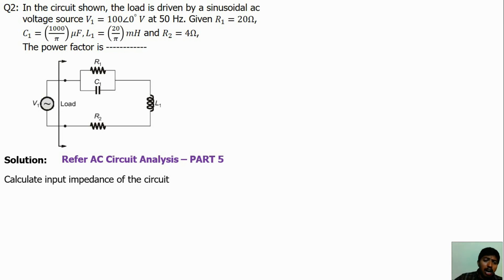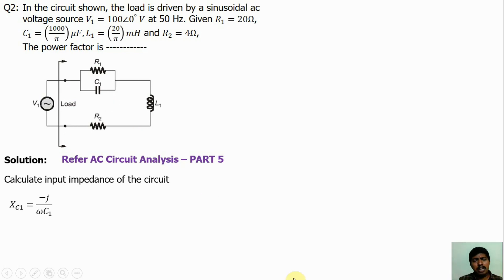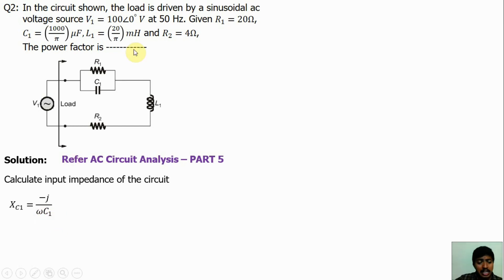Here, R1 value, capacitance value, and frequency value are given, so we can find the impedance values. First, find the capacitive reactance Xc. We know the formula: capacitive reactance Xc equals minus j divided by ωC. Here ω is angular frequency and C is capacitance. Substituting these values, we can find the capacitive reactance.